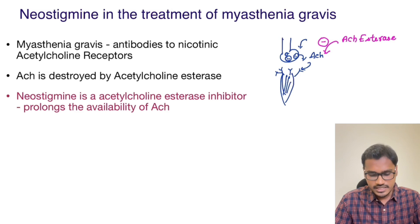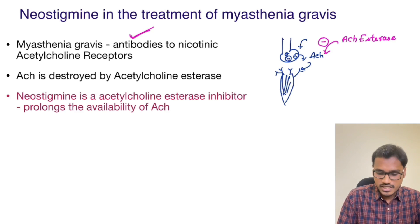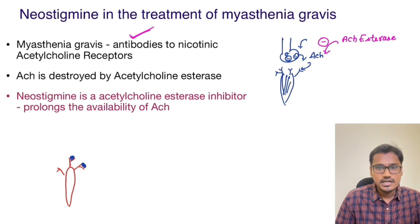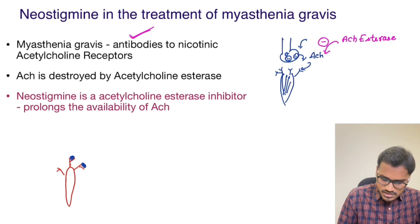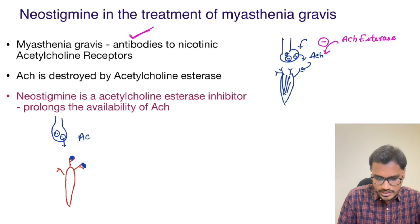In a patient of myasthenia gravis, what happens is there are antibodies against these receptors. So many of the receptors are blocked by antibodies. That means even though acetylcholine is available, the receptors are not going to function. The acetylcholine is released but they don't have receptors to bind to, so it will be destroyed by the acetylcholine esterase.